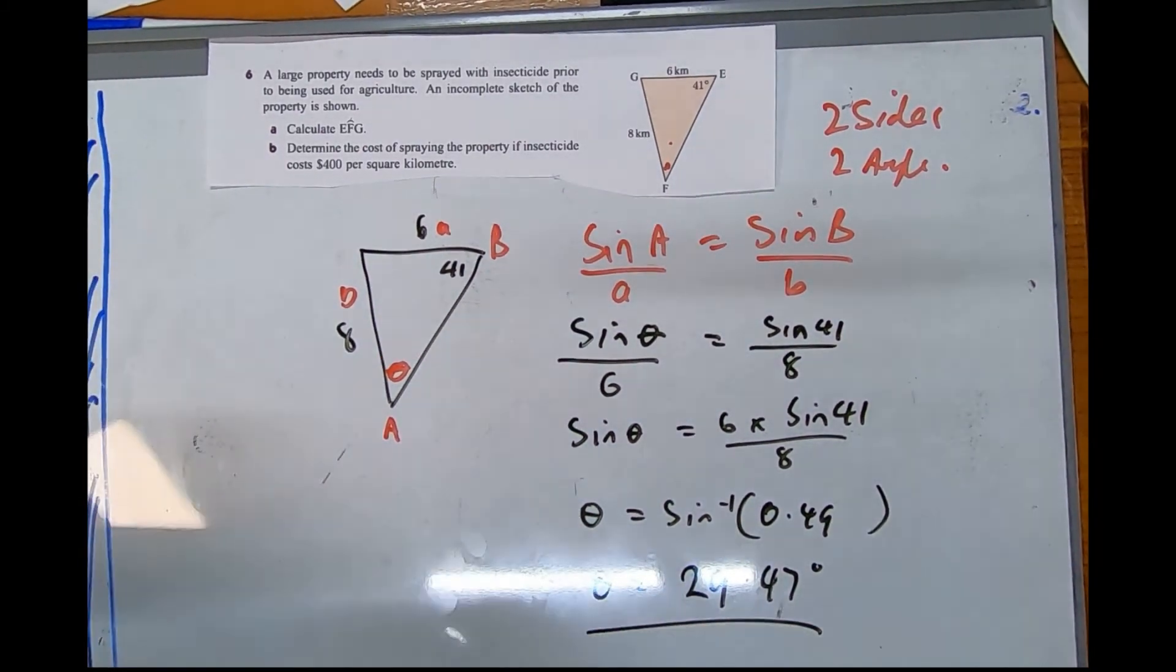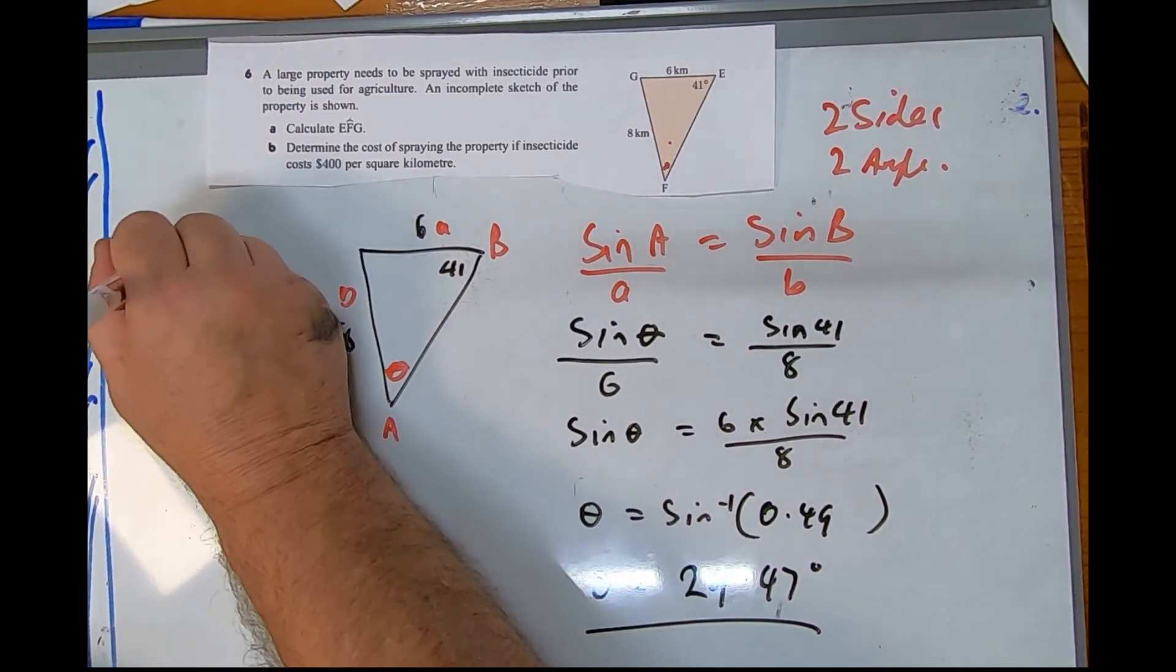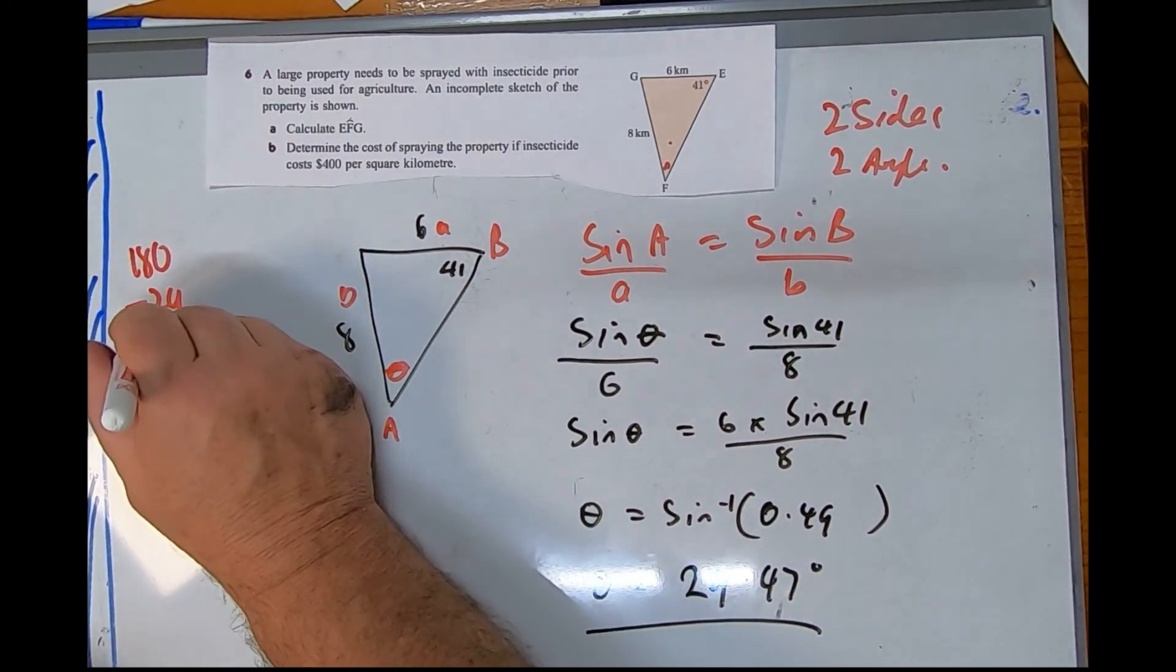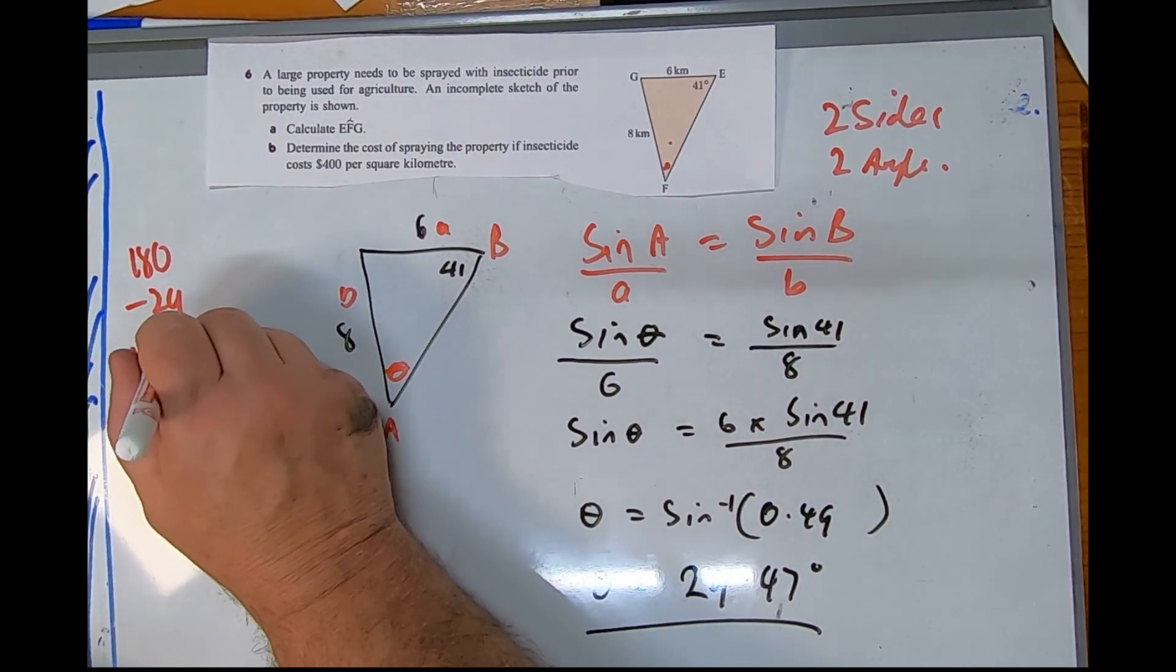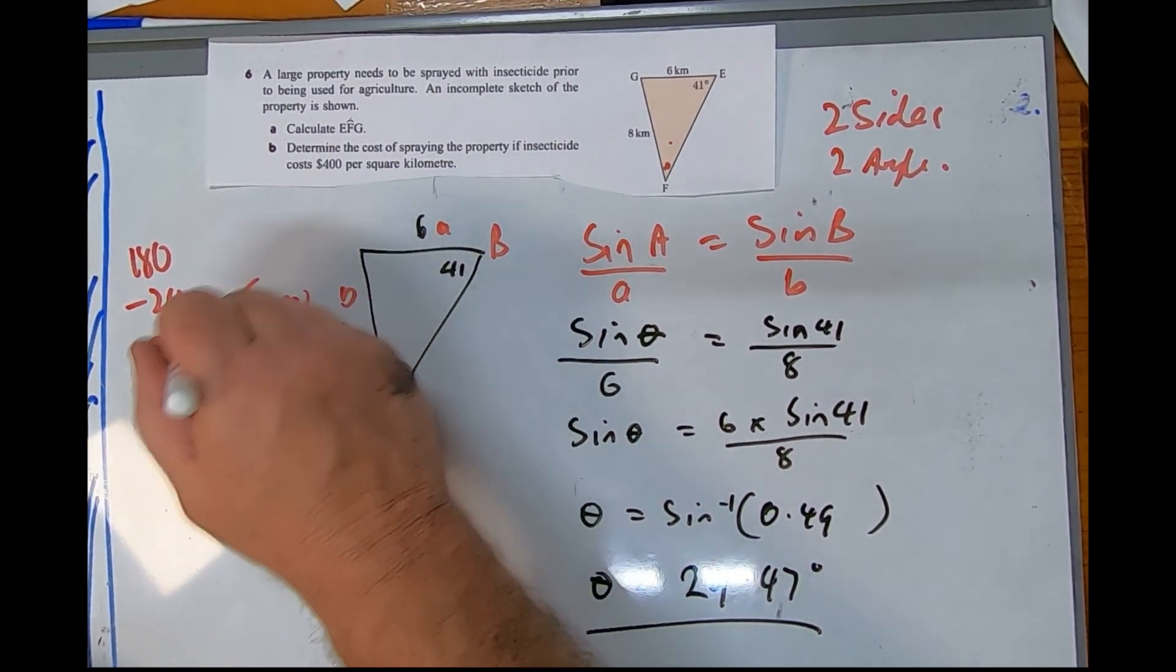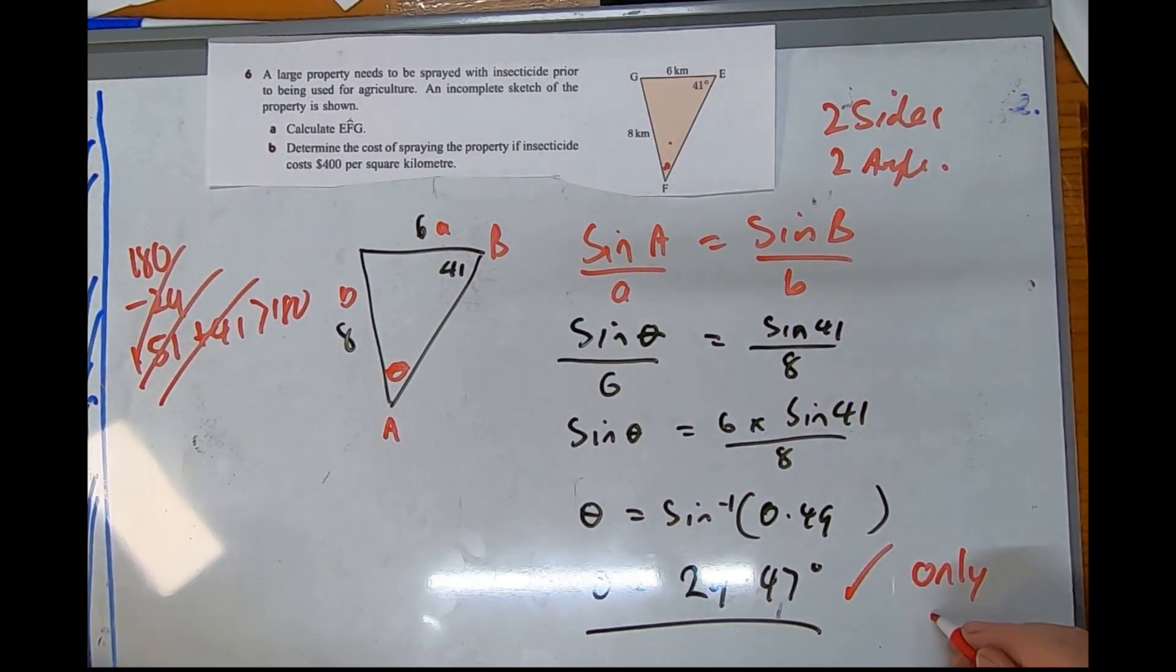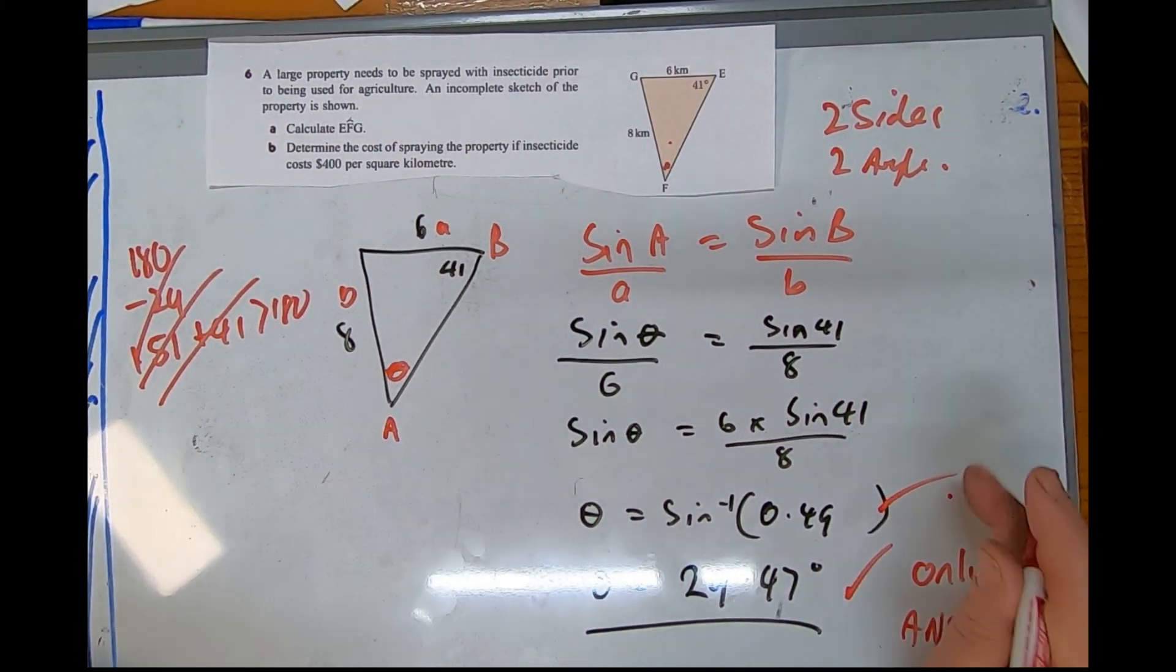Now just before we all celebrate, is it possible that it could be 180 take 29 degrees? Because that would be around about 150, which plus 41 is bigger than 180. So no, not possible. So that is the only answer. And we do that little step that I just did, and I'll just wrap that answer whenever we have shift sine in not right angle triangles.